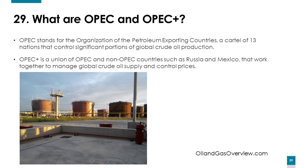What are OPEC and OPEC Plus? OPEC stands for Organization of Petroleum Exporting Countries, which is a cartel of 13 nations that control a significant portion of global crude oil production. OPEC Plus is a union of OPEC and non-OPEC countries such as Russia and Mexico, working together to manage global crude oil supply and control oil prices.